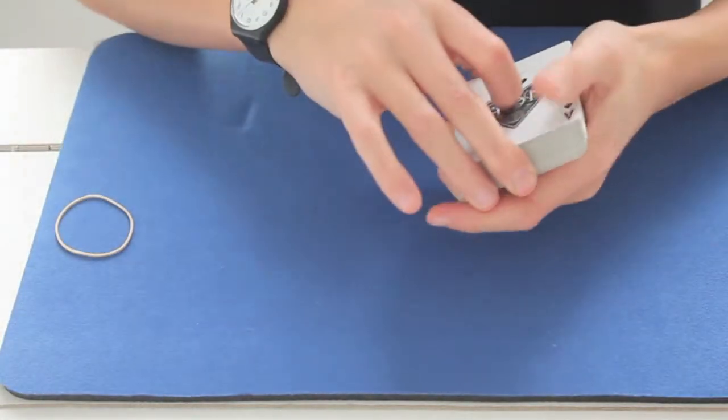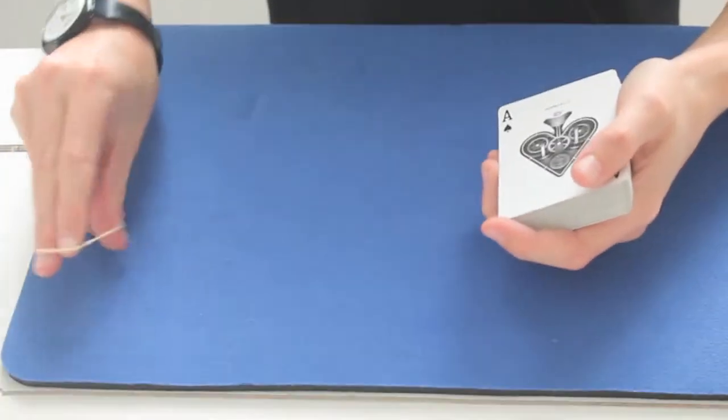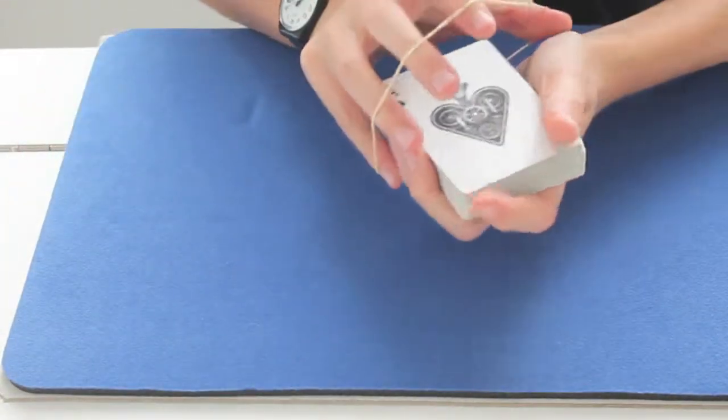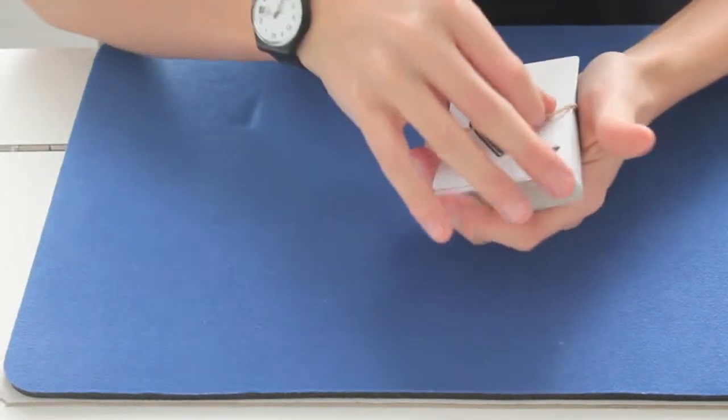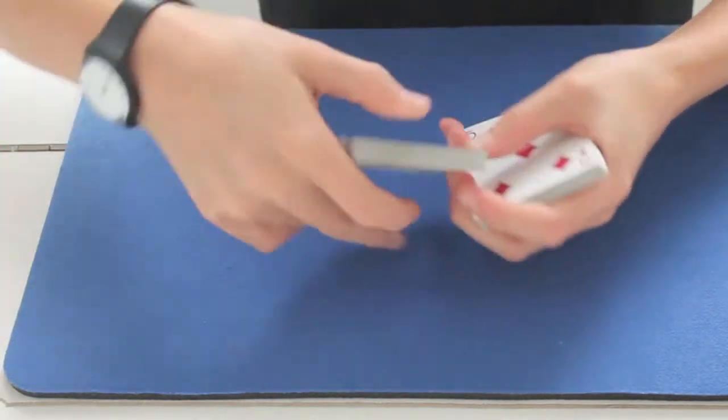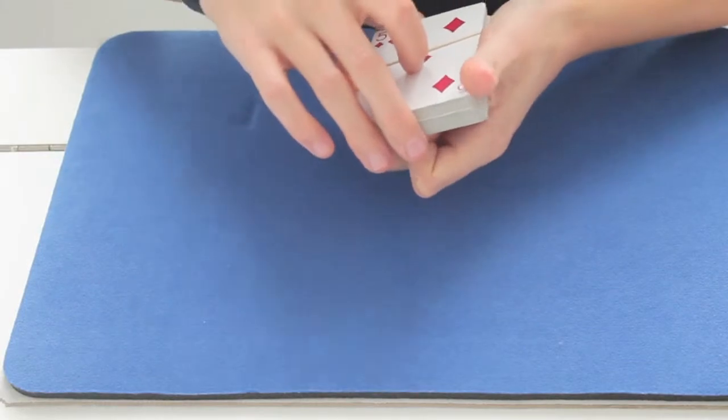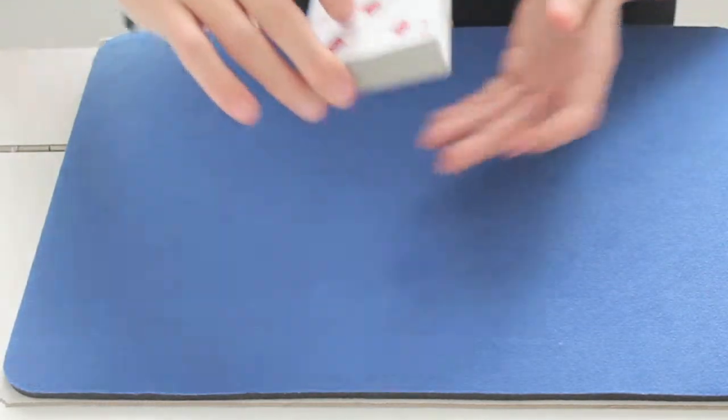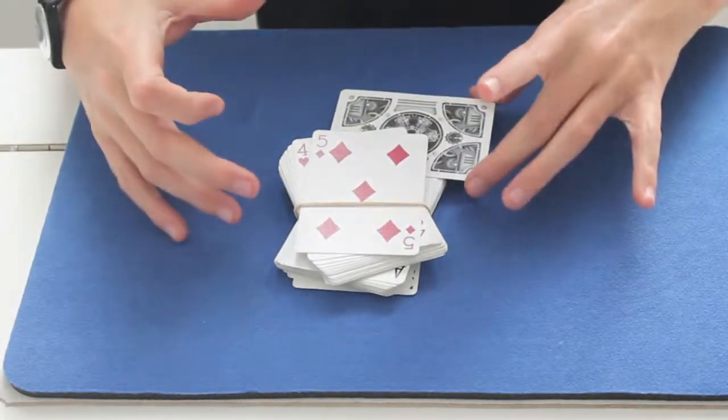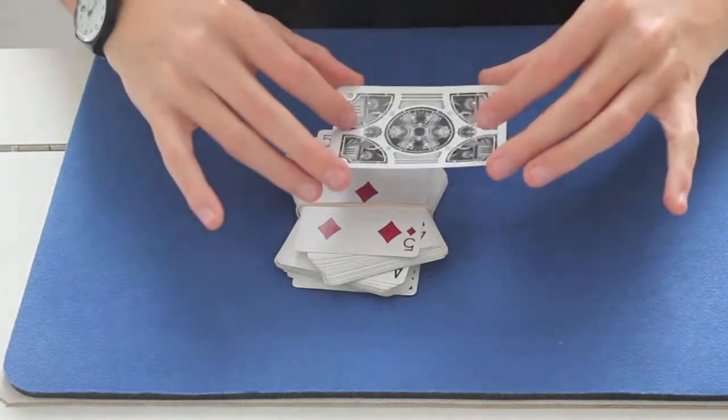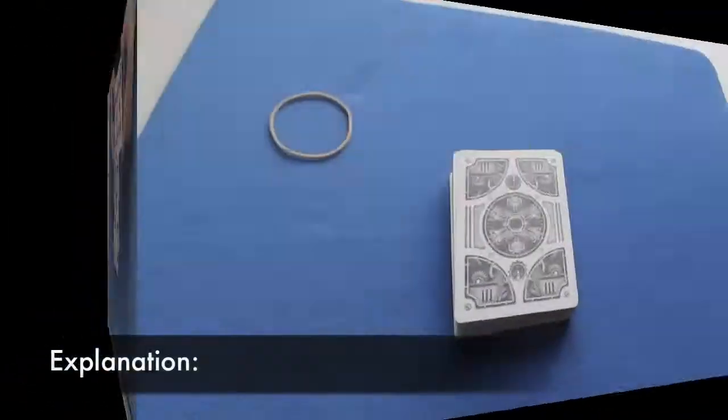And now I take my rubber band. Don't worry, it's absolutely normal. I put it around all the cards and I do a special cut to adapt myself. And now look, think of your card. Look, if the deck falls, one card comes out upside down. One card.